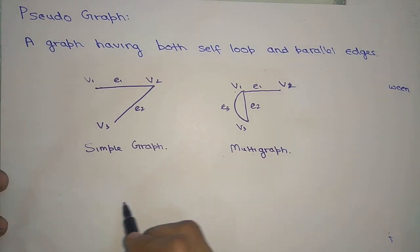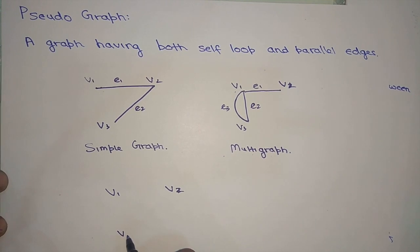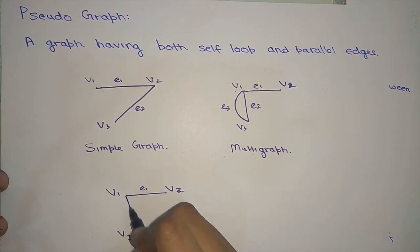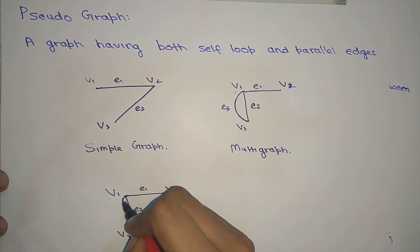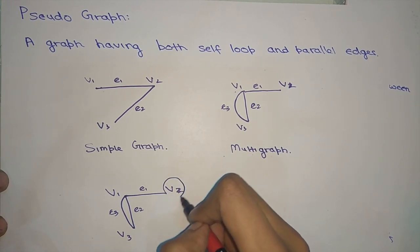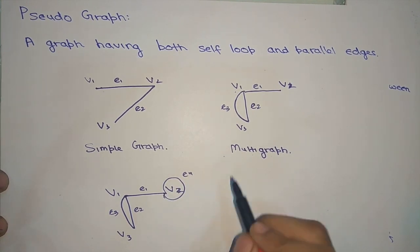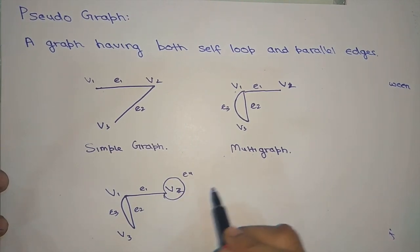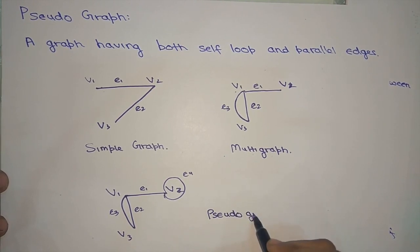Similarly, for a pseudo-graph example: given three vertices V1, V2, and V3, there exists edge E1 between V1 and V2, edge E2 between V1 and V3, and also edge E3 between V1 and V3, making E2 and E3 parallel edges. In addition, there is a self loop E4 at V2. Since this graph contains both parallel edges and a self loop, it is a pseudo-graph.